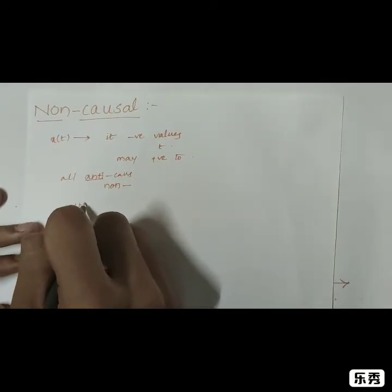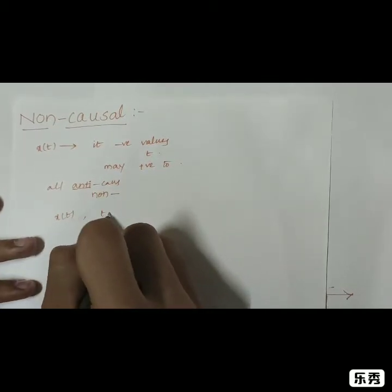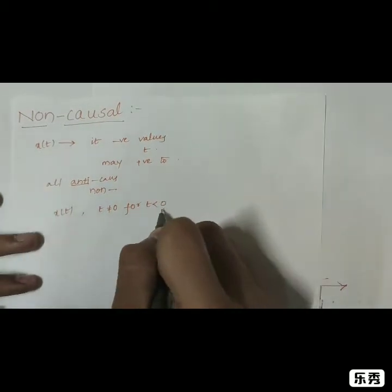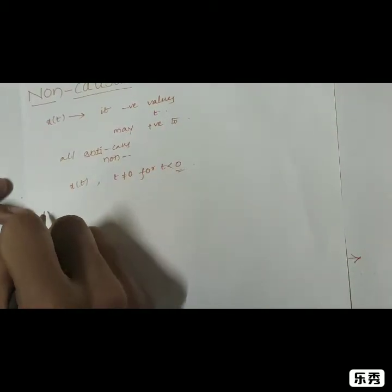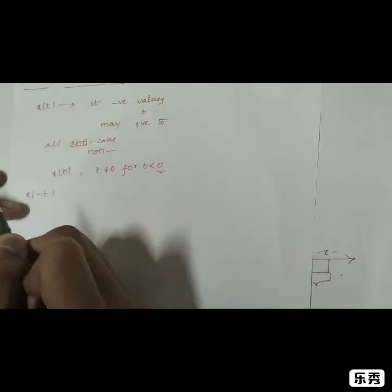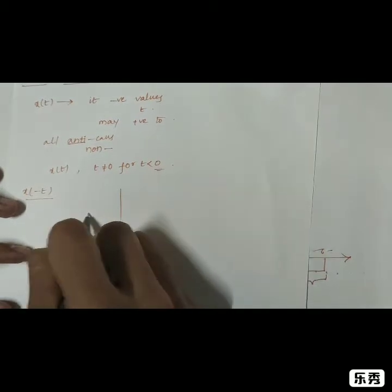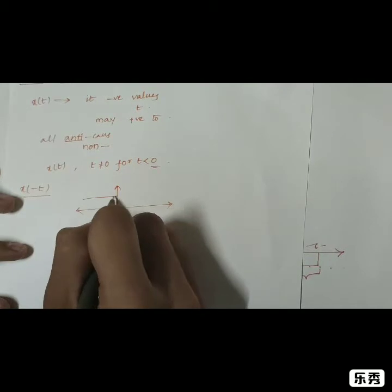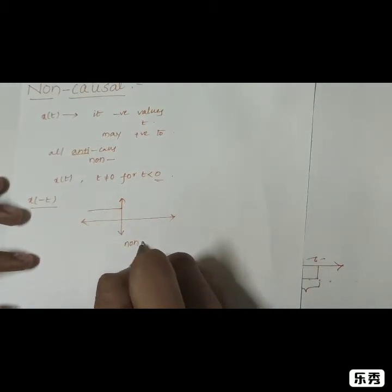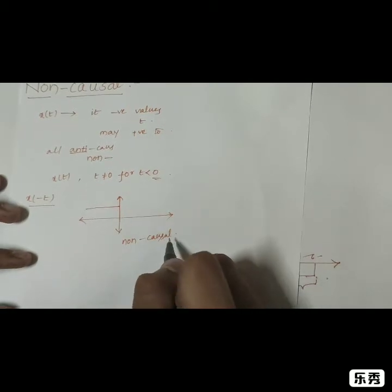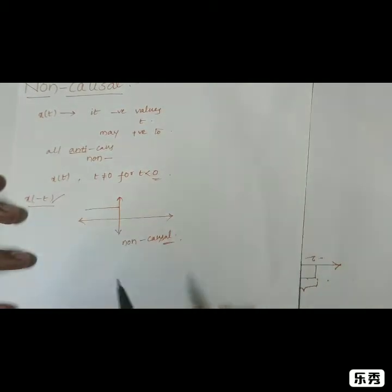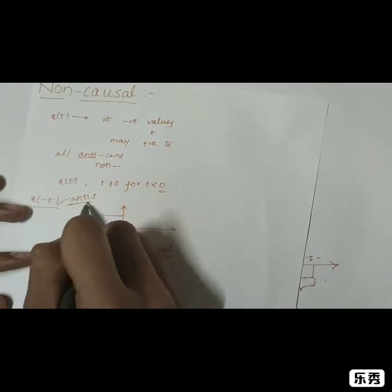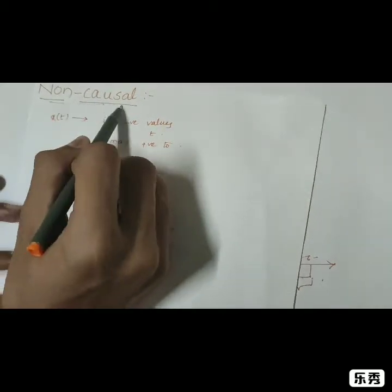If x(t) is non-causal, then t is not equal to 0 or t is less than 0. For example, x(-t) exists only for negative values of t, so it is non-causal. As discussed, it can also be said to be an anti-causal signal, since all anti-causal signals are part of the non-causal signal category.